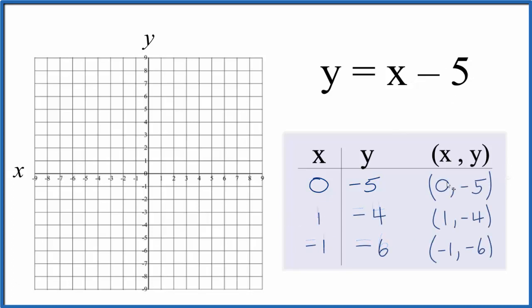So these are the points that we'll use to graph this equation y equals x minus 5. So let's start out with 0 minus 5. So 0 is the x, and then negative 5 right here for the y. That's our first point.